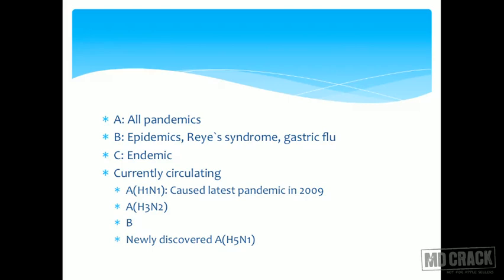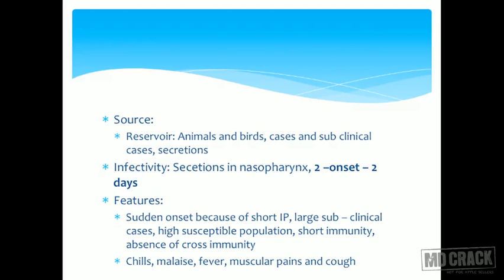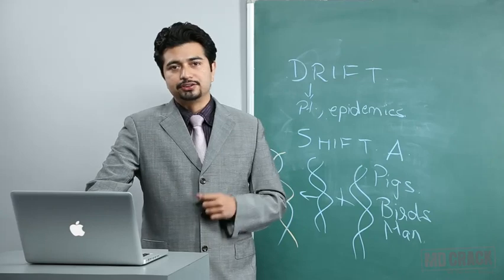The source of influenza is very diverse — reservoirs exist in animals and birds, with cases and subclinical secretions dispersed everywhere in nature. These viruses can recombine with each other to form new strains. For infectivity, secretions in the nasopharynx are infectious from two days prior to onset up to two days after onset of the disease.